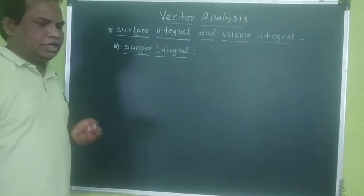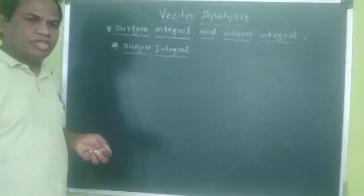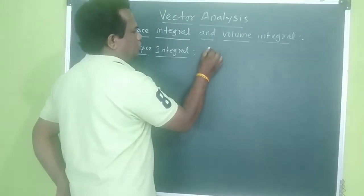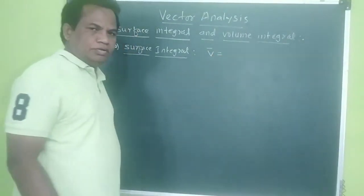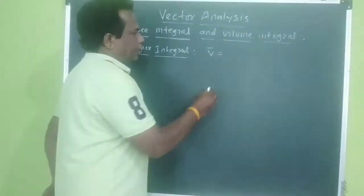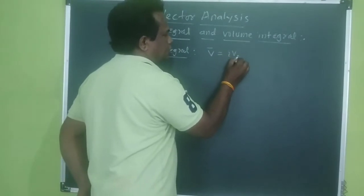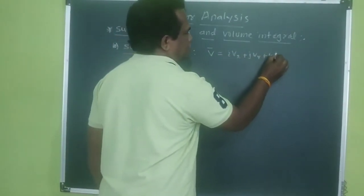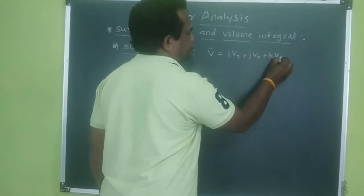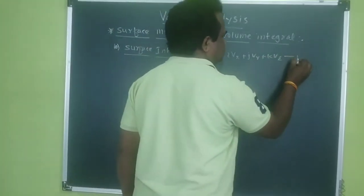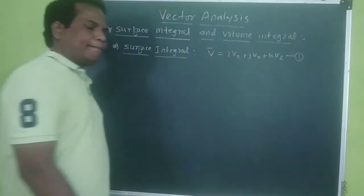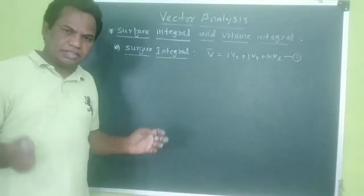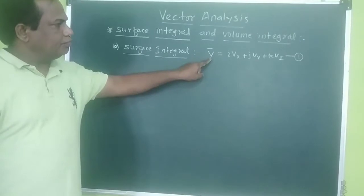Now we are going to consider any vector field P̄. P̄ is a vector field given by the value iVx + jVy + kVz. This is the equation rule we are going to consider for a vector field.